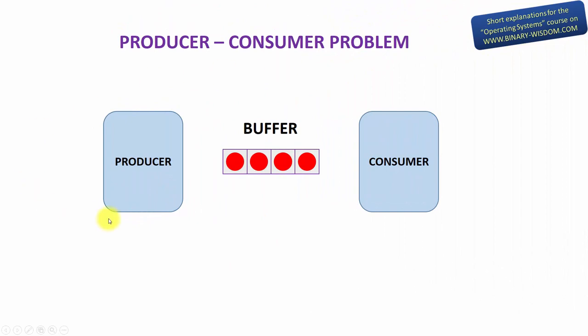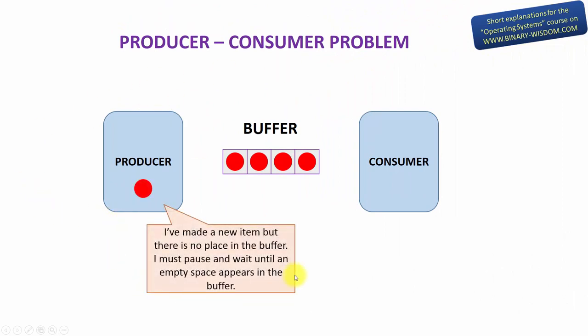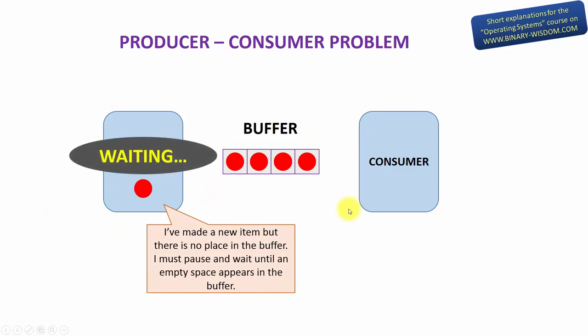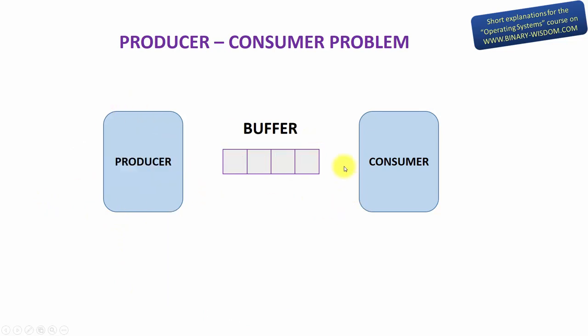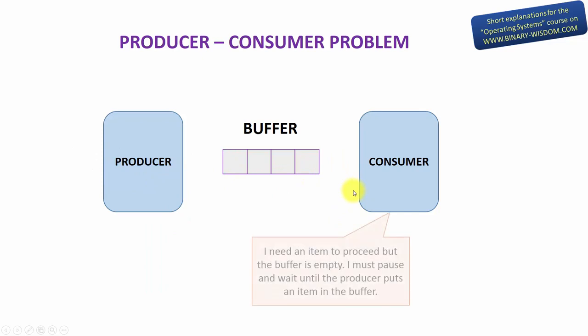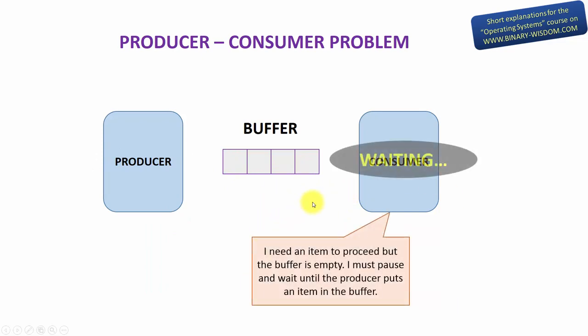We must arrange the producer in such a way that it waits for an empty space in the buffer if the buffer is full. On the other hand, if the buffer is empty and there is nothing to consume, the consumer should wait.